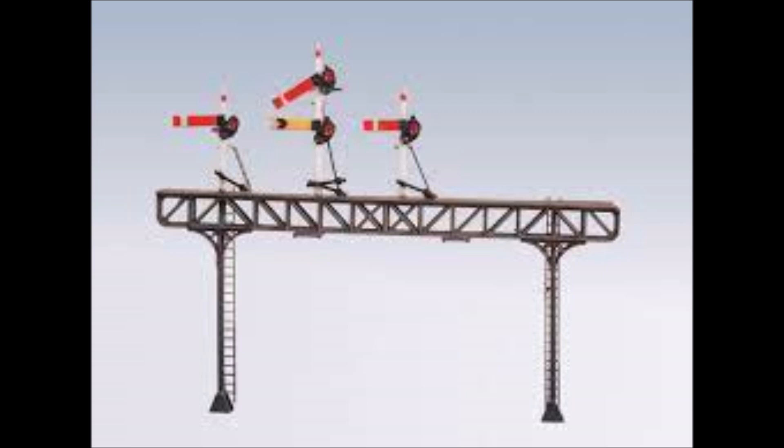Upper quadrant signals go up to mean go. Lower quadrant signals move down to mean go. Different railways used uppers and lowers. Your area, you decide what signals you're going to use.